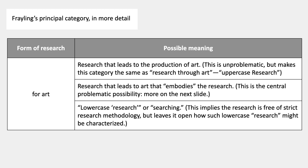The second meaning would be research that leads to art that embodies the research — as Frayling says. This is the central and problematic possibility. Frayling also implies that research for art is lowercase research, or searching — those are Frayling's terms. This implies that the research is free of strict research methodology, but it leaves open how such lowercase research might be characterized. It's a little bit like Henk Slagger's kind of freedom — a freer kind of research.